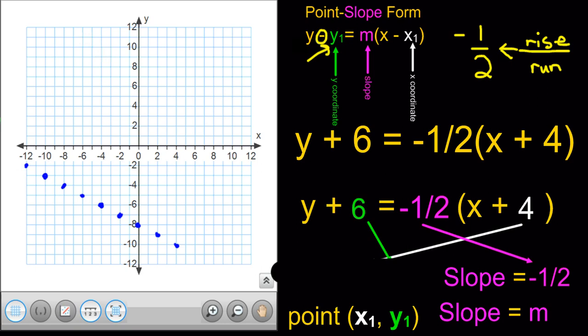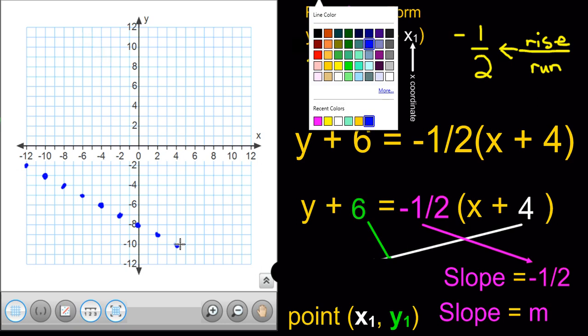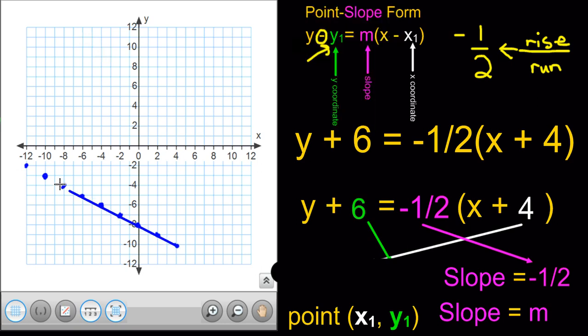And add your arrowheads to the end. And we just graphed from point-slope form by putting it into a point and the slope, and then graphing the equation. Well, I hope this helped you out with understanding how to graph from point-slope form. See ya!